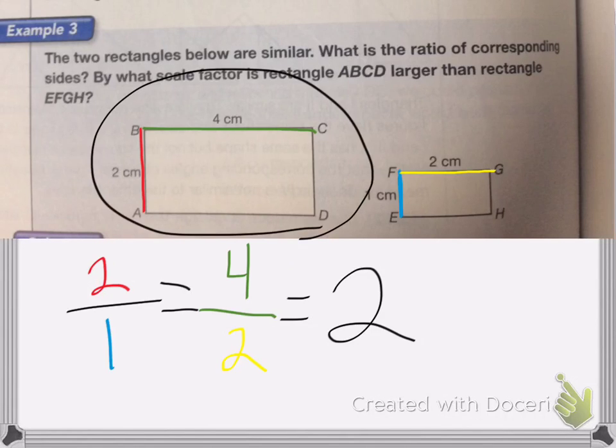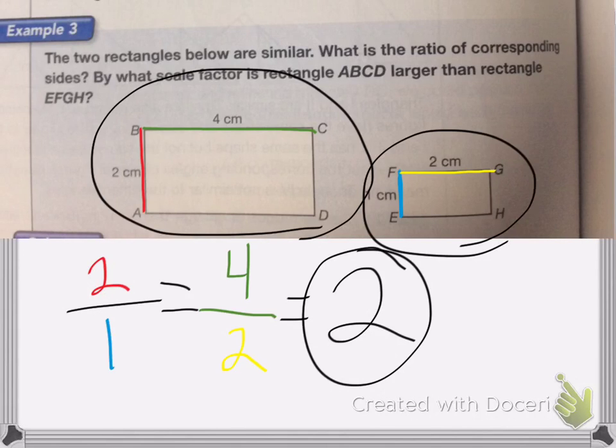Rectangle ABCD is 2 times bigger than rectangle EFGH. So my answer would be 2. And that's all. Good luck on your homework.